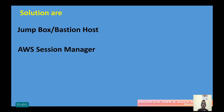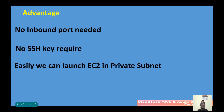Another solution is using a jump box or bastion host, which I have already demonstrated in my previous session. Today's session focuses only on AWS Session Manager — how to configure it and connect to an instance without any SSH key. Another advantage is that when connecting via Session Manager, you do not need to open any port in the security group inbound rules, and you don't need any SSH key. Even instances in a private subnet can be accessed easily.